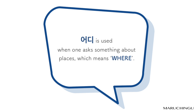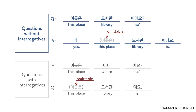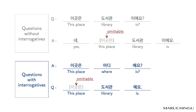어디 is used when one asks about places, which means 'where.' Questions without interrogatives: 이곳은 도서관이에요? — 네, 도서관이에요. The subject can be omitted.